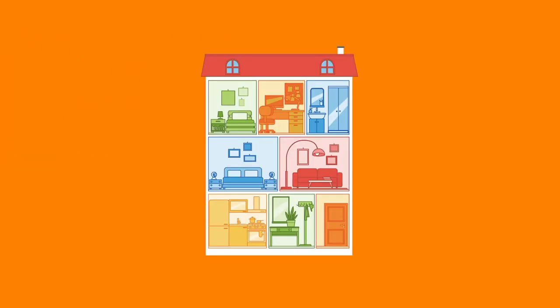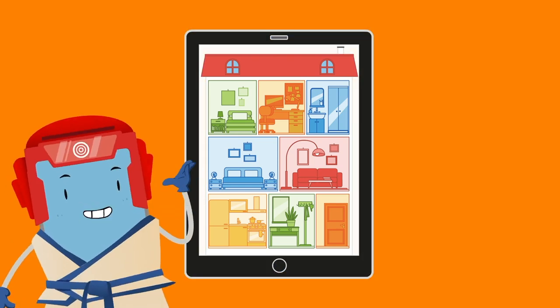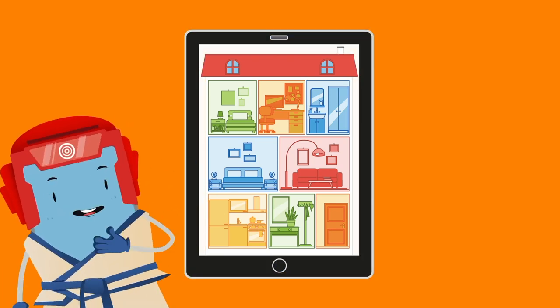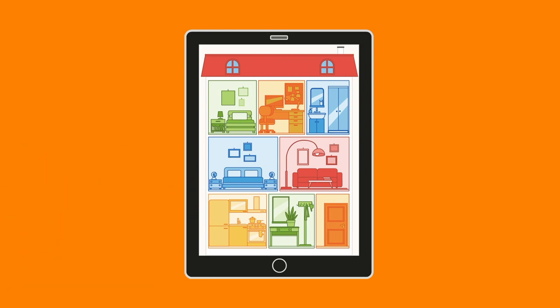What can we see in this image? The answer is really simple — it's a house! What about now? I'm sure you know what it is. It's a tablet. A tablet, like a smartphone, is your digital home.